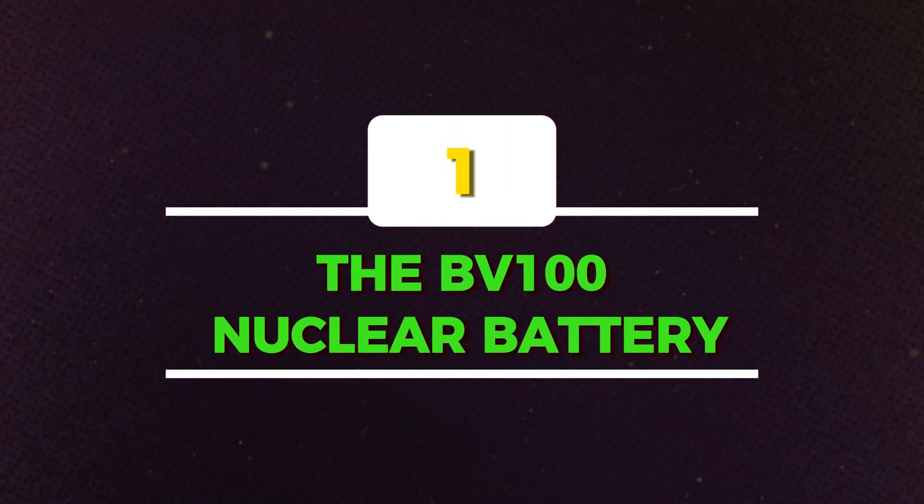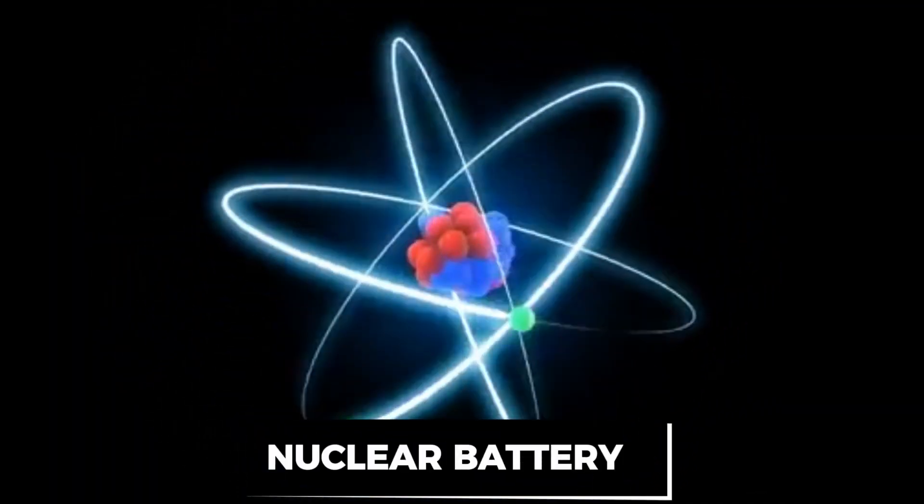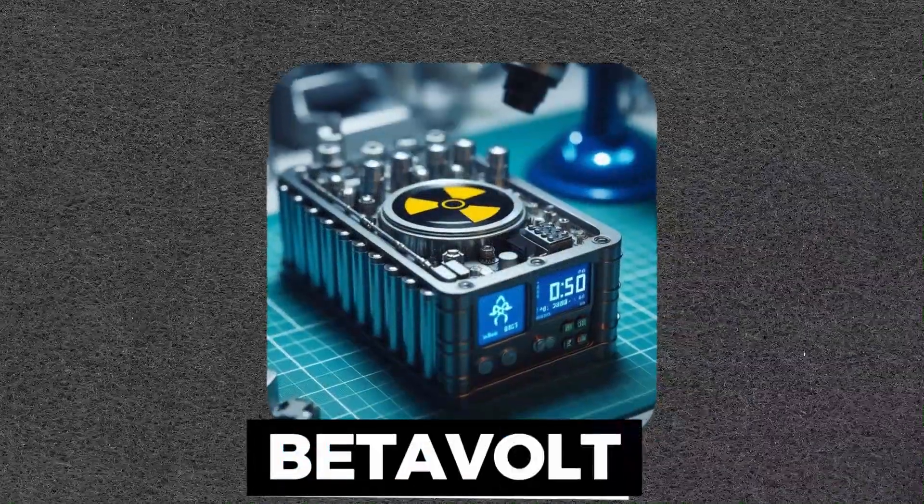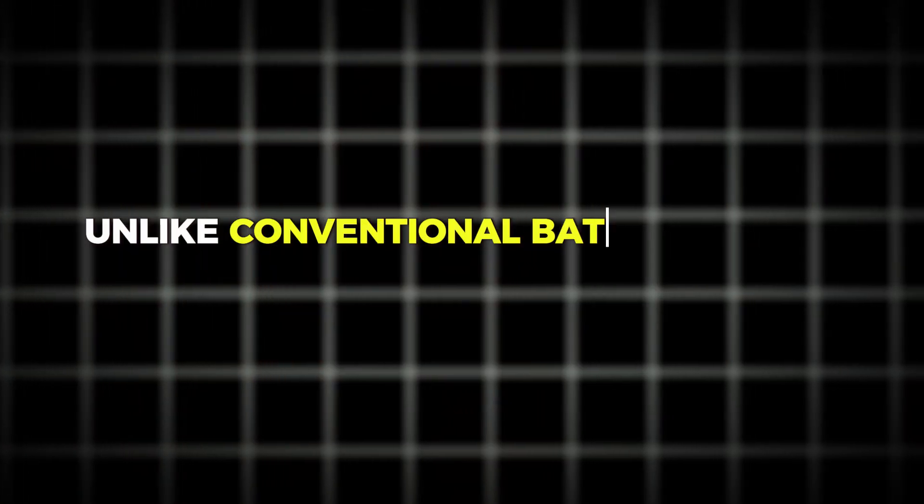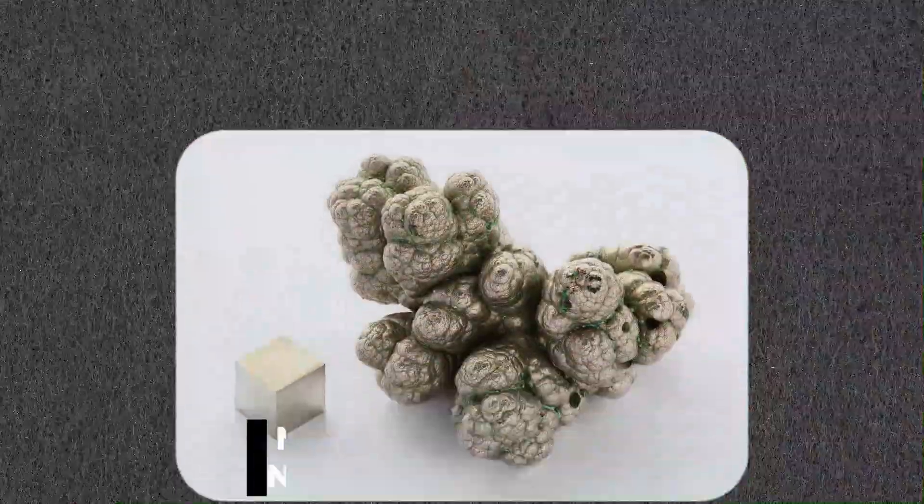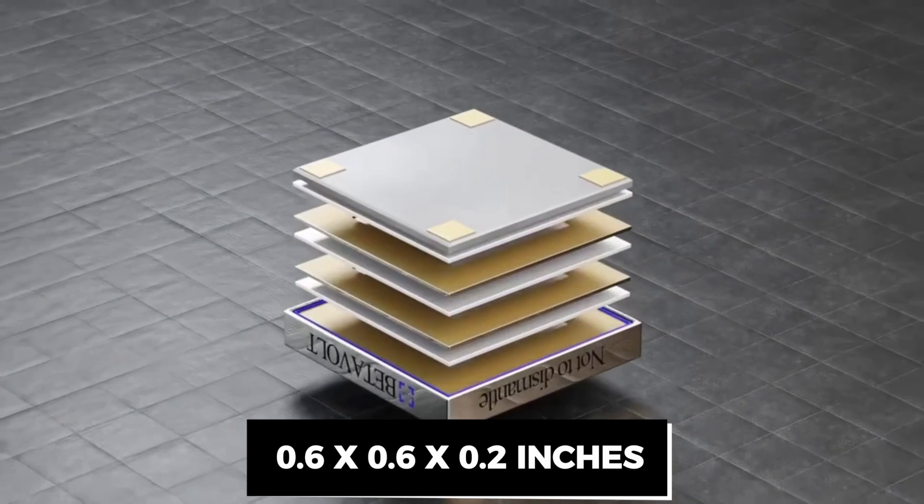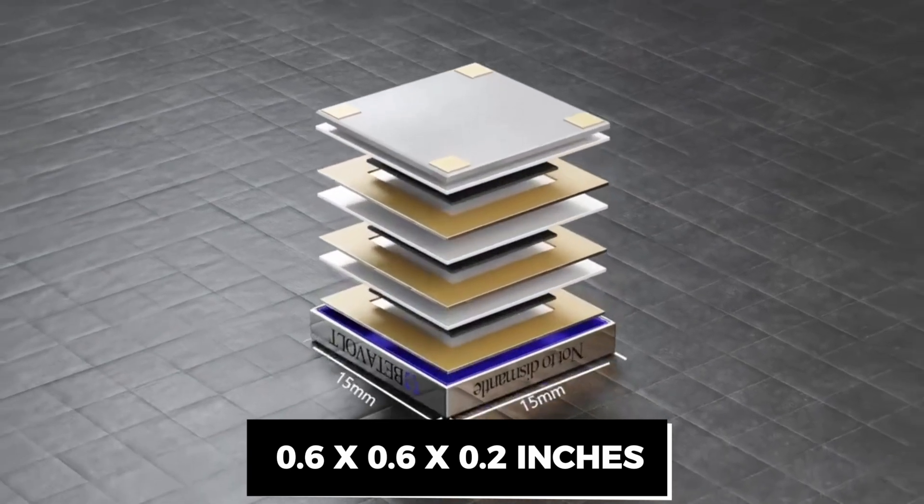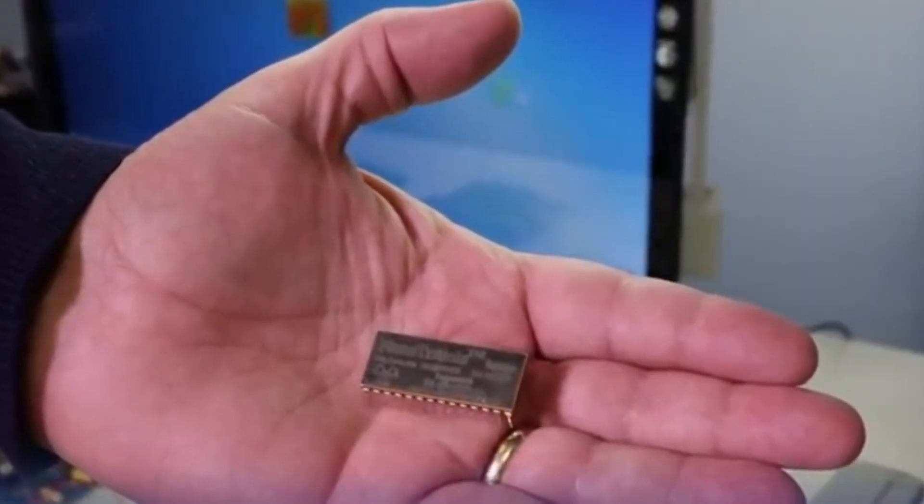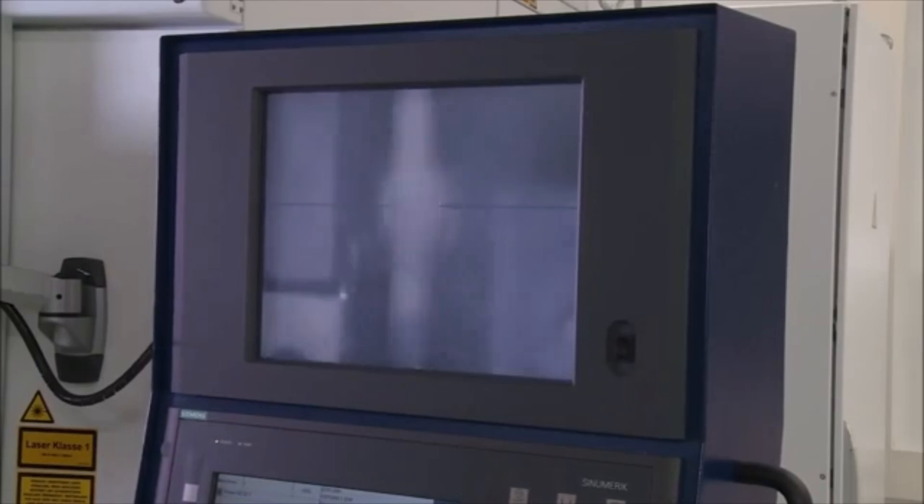The BV-100 is a revolutionary nuclear battery developed by Betavolt that harnesses the power of radioactive decay to generate electricity. Unlike conventional batteries that rely on chemical reactions, the BV-100 uses a radioactive isotope of nickel, known as nickel-63, as its energy source. Measuring a mere 0.6 by 0.6 by 0.2 inches, it is incredibly small yet capable of producing 100 microwatts of power.